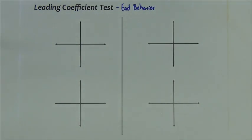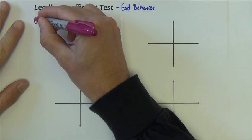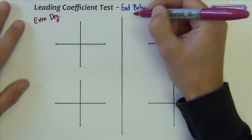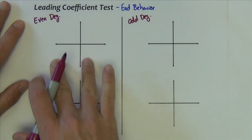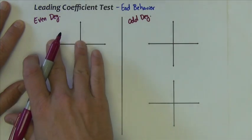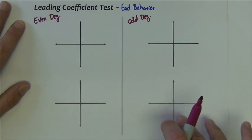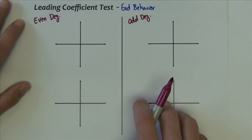I've got this divided into four graphs and we'll characterize each one. All polynomial functions are either going to have an even degree or an odd degree. Even powers would be like x squared, x to the fourth, x to the sixth, etc. And odd powers would be x, x cubed, x to the fifth, etc. So all polynomial functions are one of those two cases.